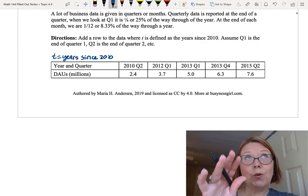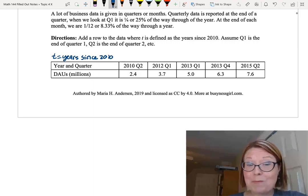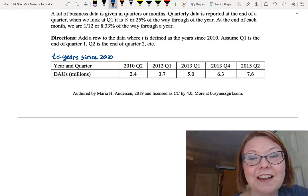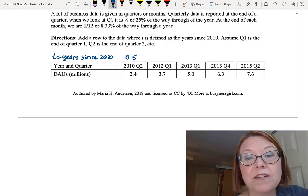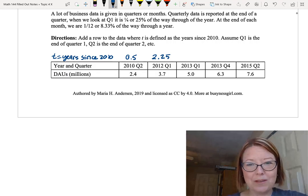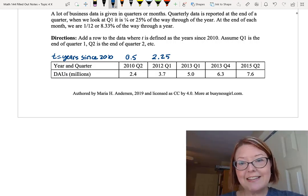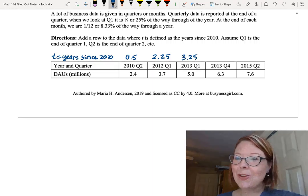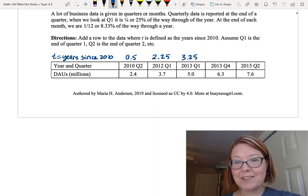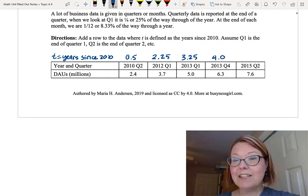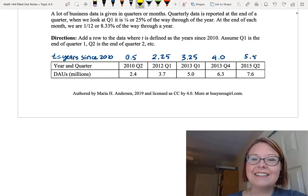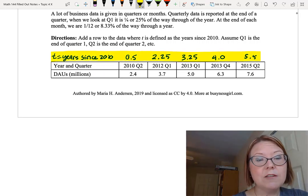We're going to add a row to the table above the first row that says T equals years since 2010. Okay, so 2010 quarter two would be 50% of the way through the year. The beginning of the year would be zero. Halfway through the year would be time 0.5. 2012 at the very beginning would be a year two, but we are at the end of the first quarter. So that would be 2.25, 25% of the way through the year. 2013 would be year three. We're again at the end of quarter one, so that's going to be 3.25. 2013 quarter four is 100% of the way through 2013, so we're actually not at year three anymore. We're at year four. We're at 4.0, the very beginning of 2014. And finally, 2015 quarter two would be T equals five, but 50% of the way through it. So that would be 5.5. Now, if we were going to construct a function or a graph from this data, we would use the row that redefines T and the row with DAUs in millions.